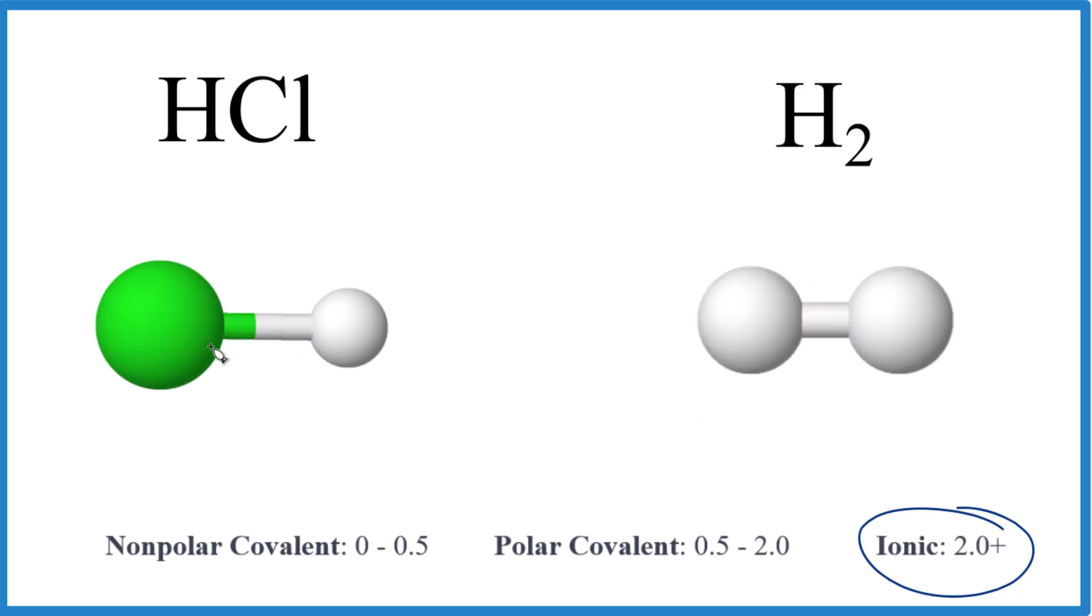So over here, chlorine is more electronegative. So the electrons spend more time around the chlorine. We get a negative side and a positive side. Partial negative, partial positive. That makes this polar.